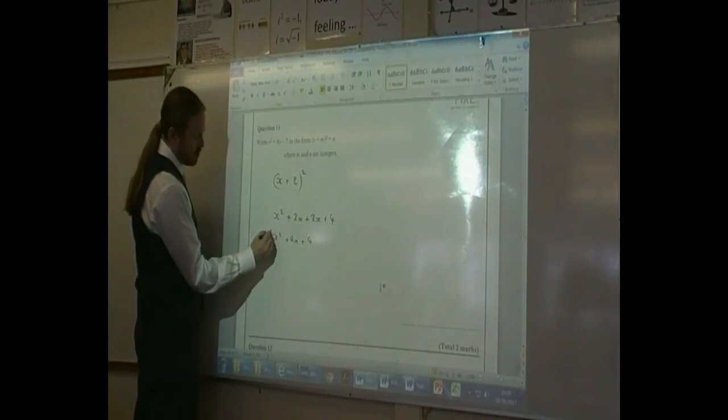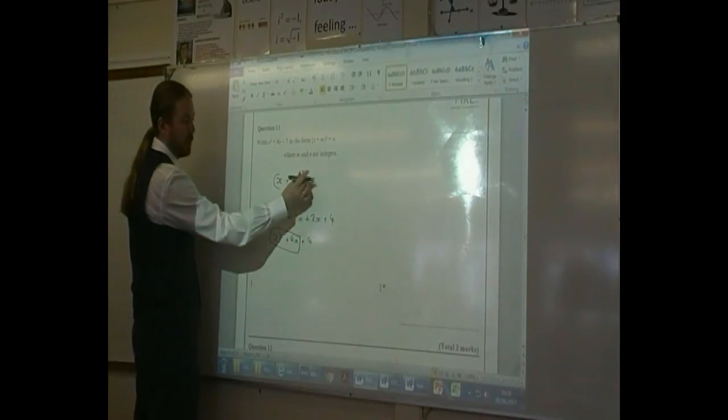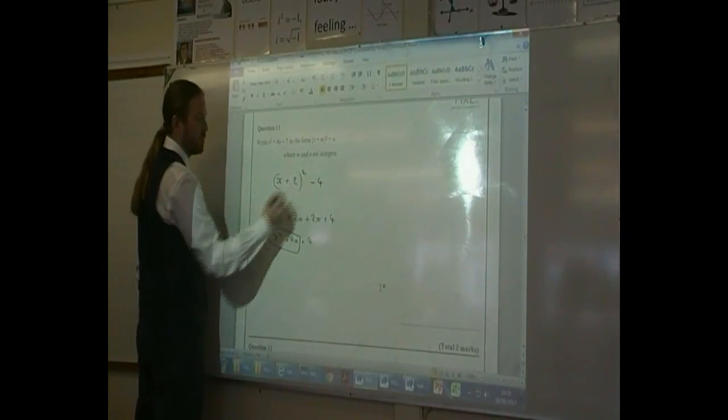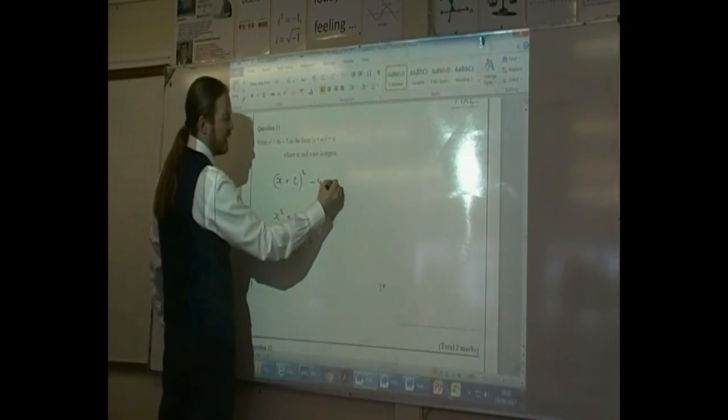So to get just that bit, we'd have to take away the 4. So we put minus 4 here. And then we've already got minus 7. So we add that on.